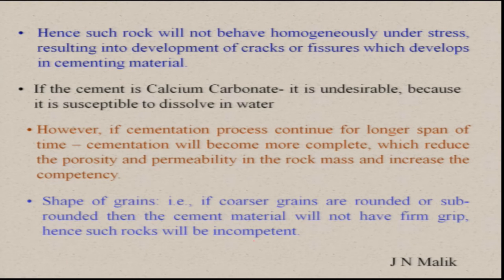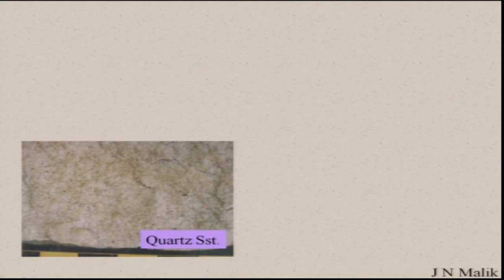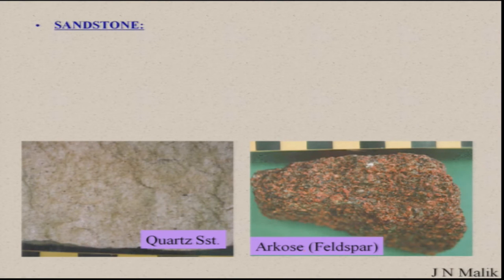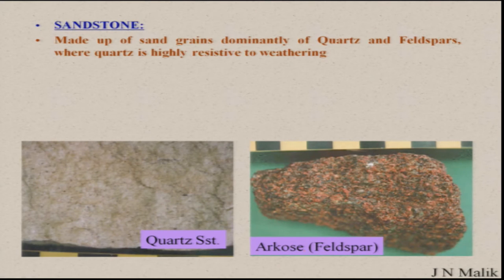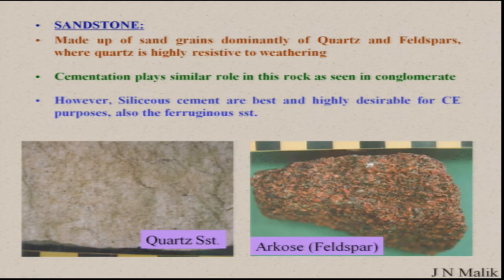So once we have discussed the chemical composition of the matrix or cementing material and the shape of the grain size, we look at arkose sandstone — a feldspar-rich sandstone made up of sand grains dominantly of quartz and feldspars, where quartz is highly resistive to weathering. Cementation plays a similar role in this rock as seen in conglomerate. Siliceous cement is best and highly desirable for civil engineering purposes, as is ferromagnesian sandstone.